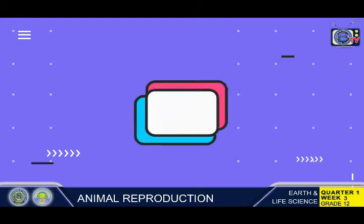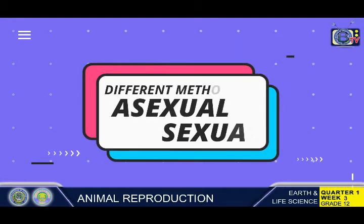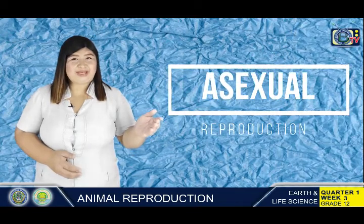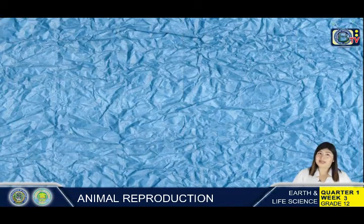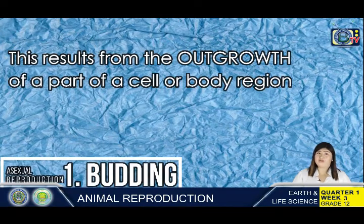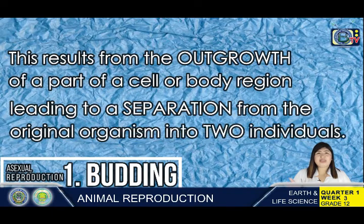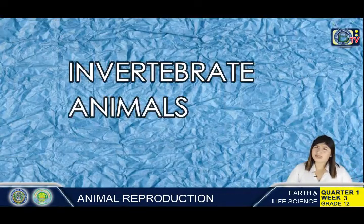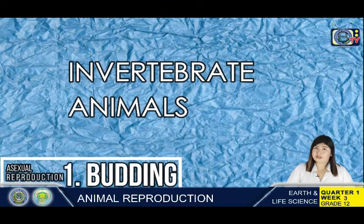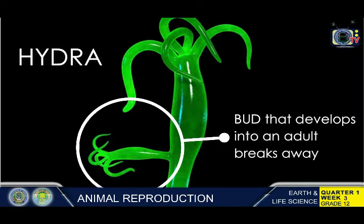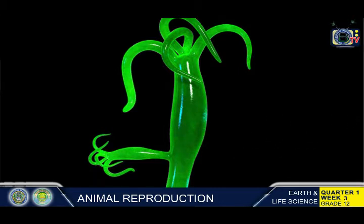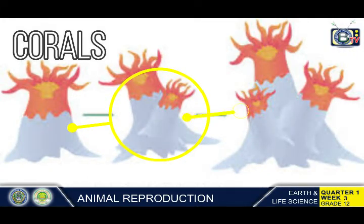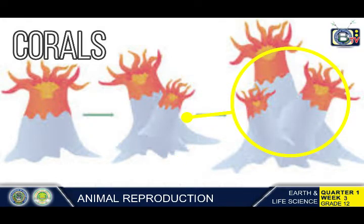Let us now proceed to the different methods of asexual and sexual reproduction. First, the methods of asexual reproduction. Budding — this results from the outgrowth of a part of a cell or body region, leading to the separation from the original organism into two individuals. Budding occurs commonly in some invertebrate animals such as corals and hydras. In hydras, a bud forms that develops into an adult which breaks away from the main body, whereas in coral budding, the bud does not detach and multiplies as part of a new colony.